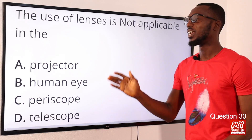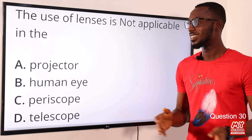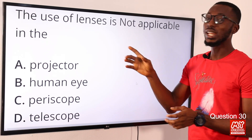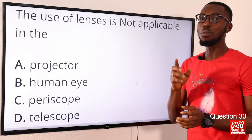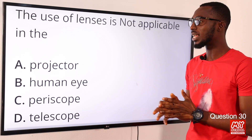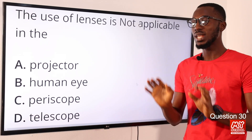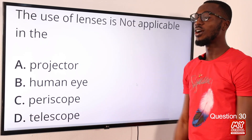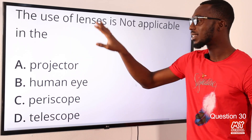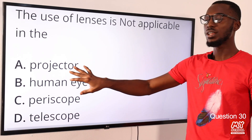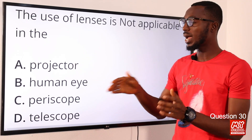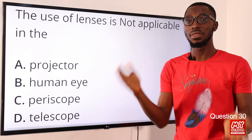Question 30: The use of lenses is not applicable in which of the following? The answer is the periscope. The projector consists of two plano-convex lenses that collect light from the light source onto the slide. For the human eye, we can identify the sclera, choroid, and retina, and the lens is found there as well.